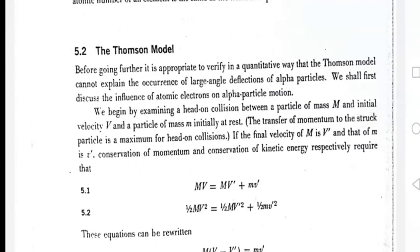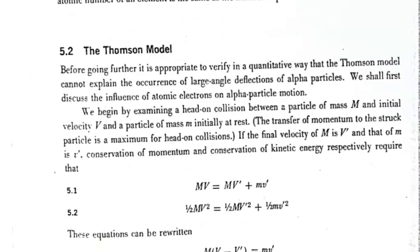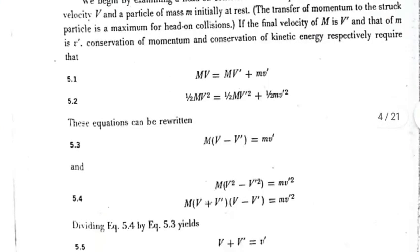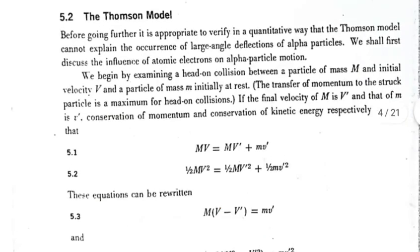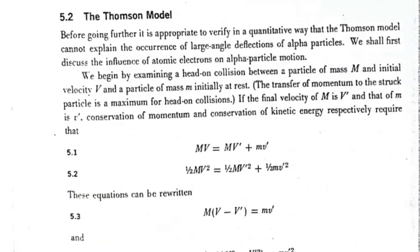In today's lecture, we will prove that when an alpha particle comes and you consider the Thomson model and see the interaction with the electron, then the alpha particle will see the positive charge cloud. At the end, you will see that the scattering angle is a small scattering angle if you consider the Thomson model.